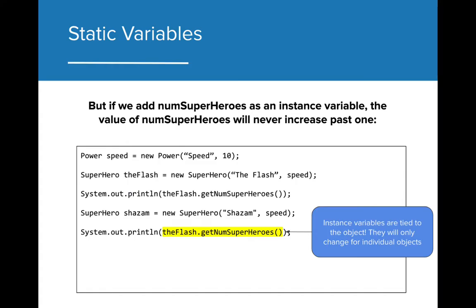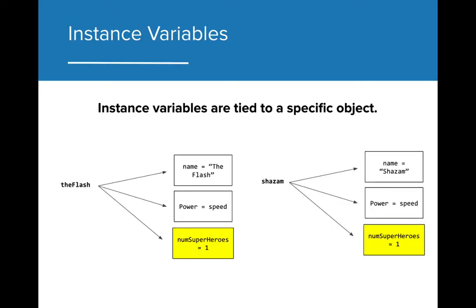The reason is that the instance variable numSuperheroes is tied directly to the object that was created. Remember that instance variables are specific to the object that is being created. Every time that a new superhero is being created, a new numSuperheroes variable is being initialized and referenced. As we can see here, both the Flash and Shazam have their own numSuperheroes variables that are being referenced. Changes to one will not affect the other, so the instance variable is an ineffective way to track the number of superheroes that are being created.